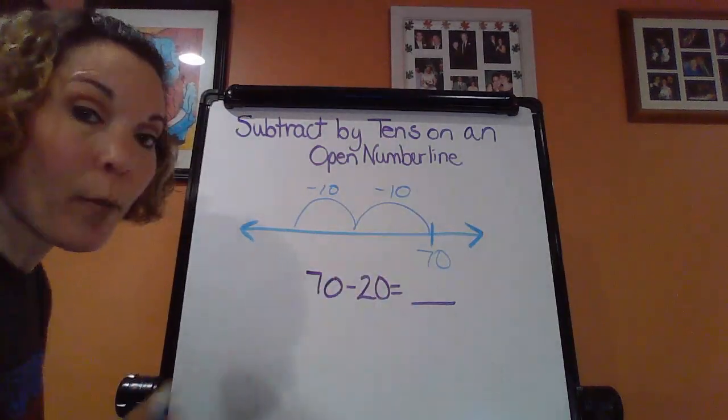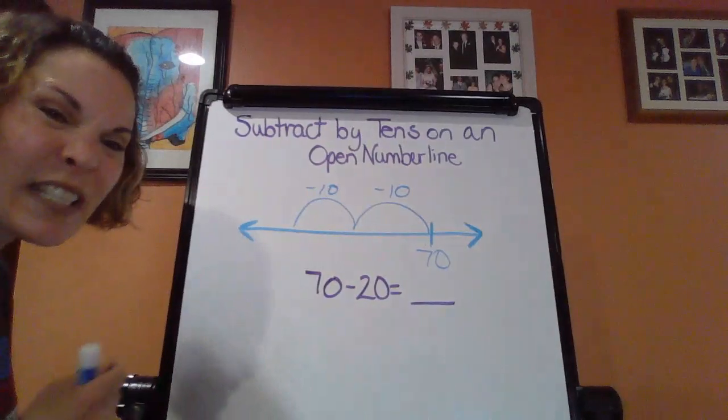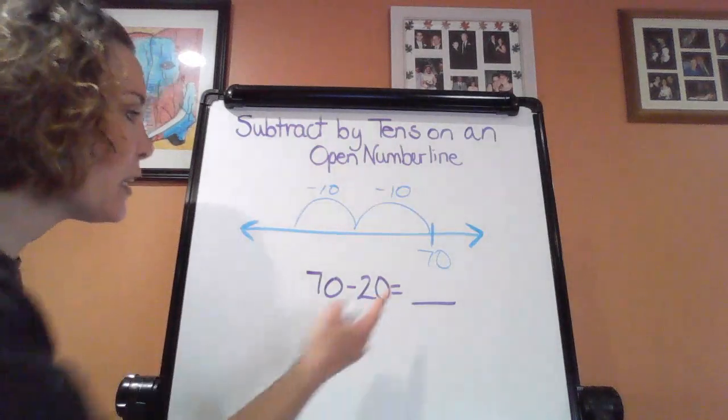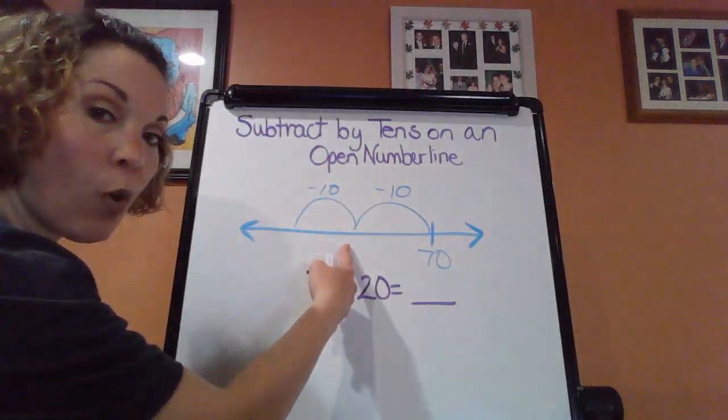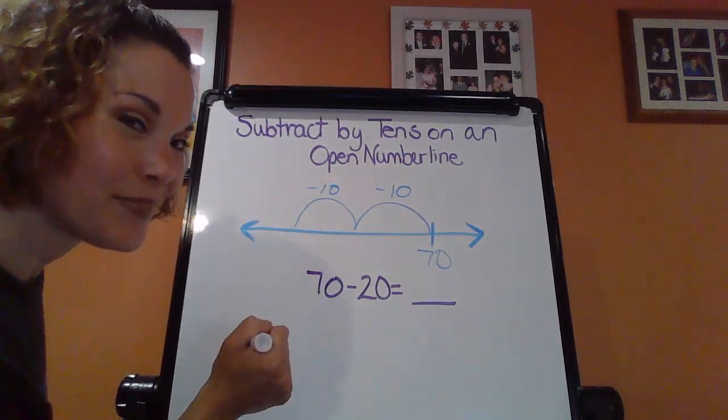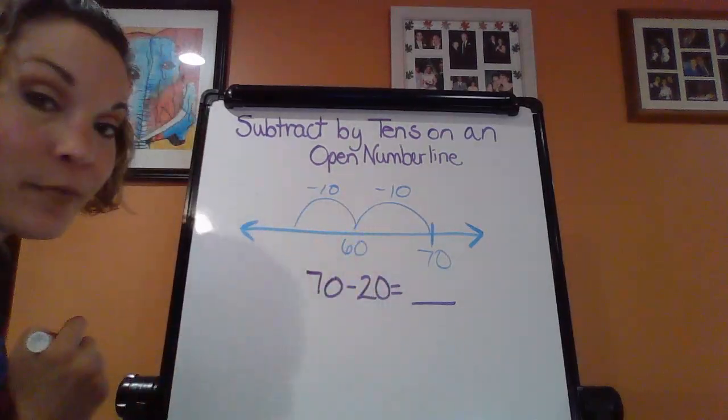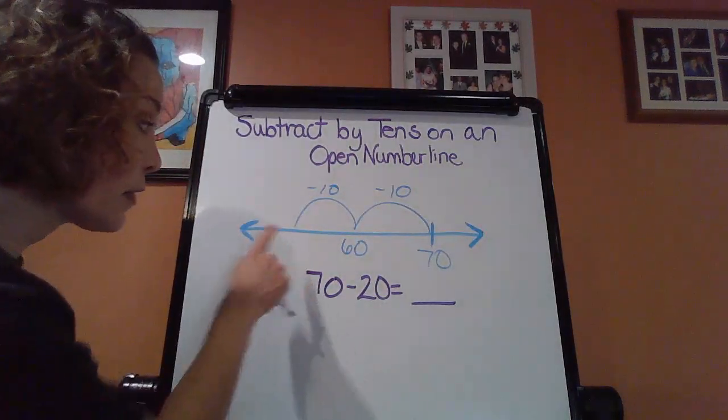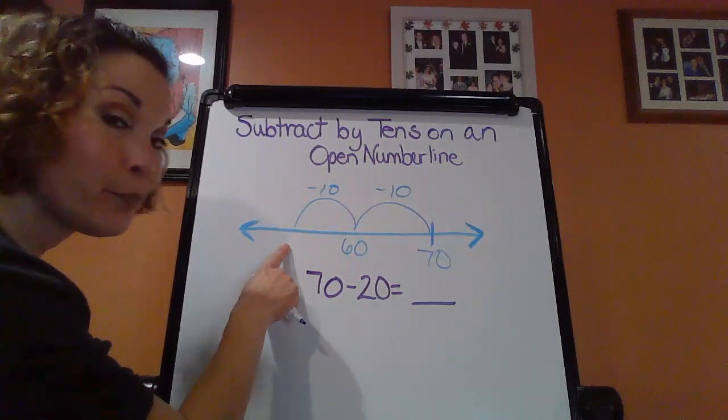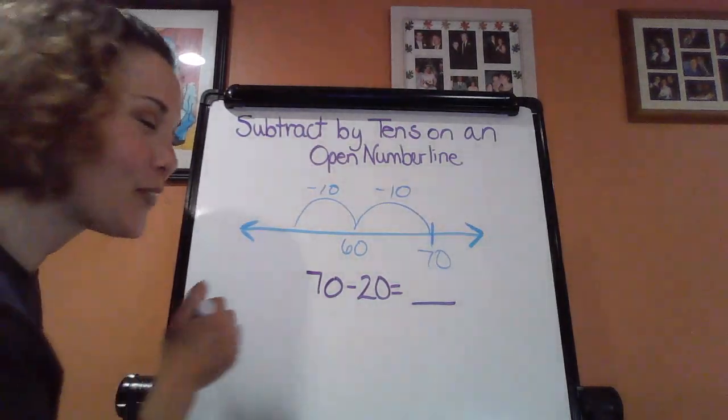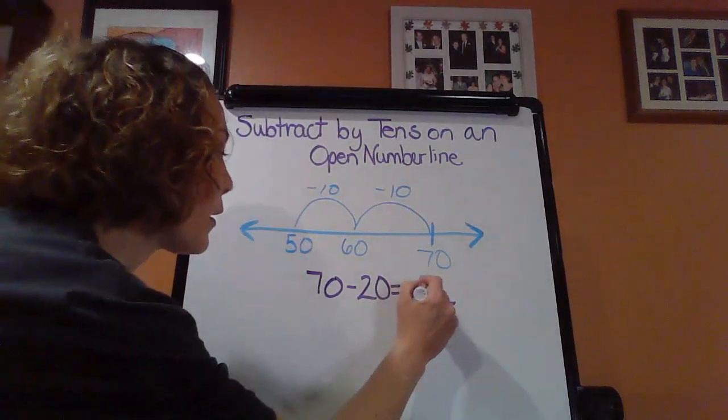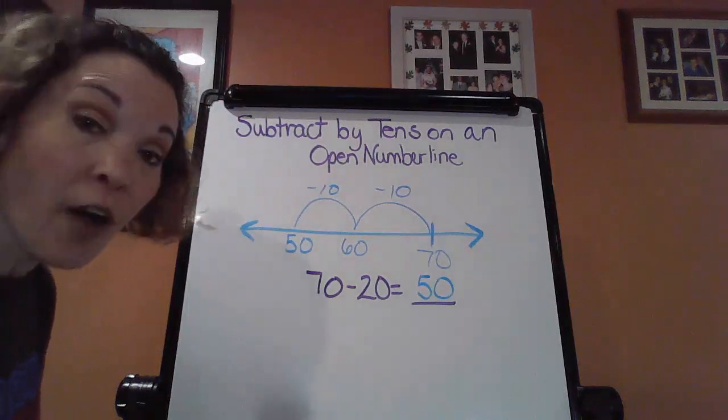But now I got to figure out what my answer is. So if I'm starting at 70, thinking about, I'm counting back by 10s. 70, one more 10. Are you thinking? It's 60. And then I still need one more. 70, 60. I hope you said it. 50. So technically, 70 minus 20 is going to give me a difference of 50.